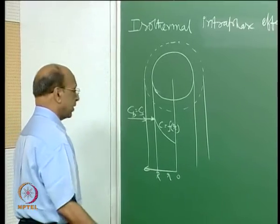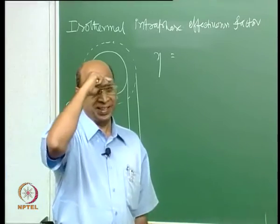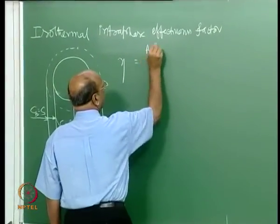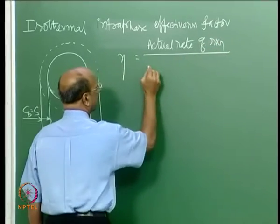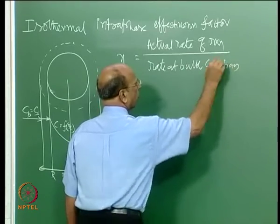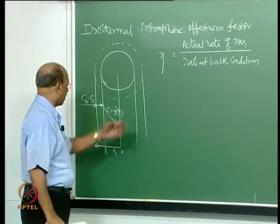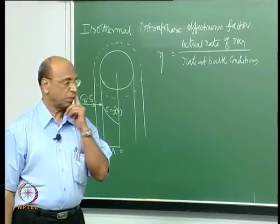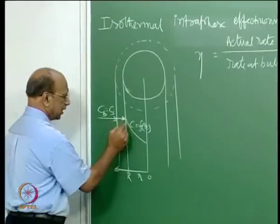What we have to do now is the effectiveness factor definition. The definition in words: actual rate of reaction divided by rate at bulk conditions C_b. So here we have to find out what is the actual rate going on throughout the particle, divided by the rate based on bulk conditions. For example, for a first-order reaction you have K times C_b.